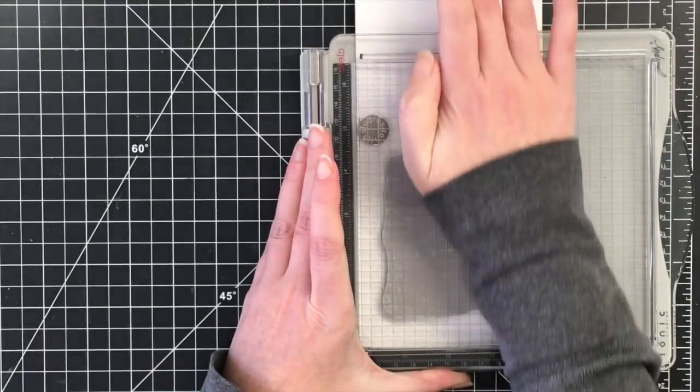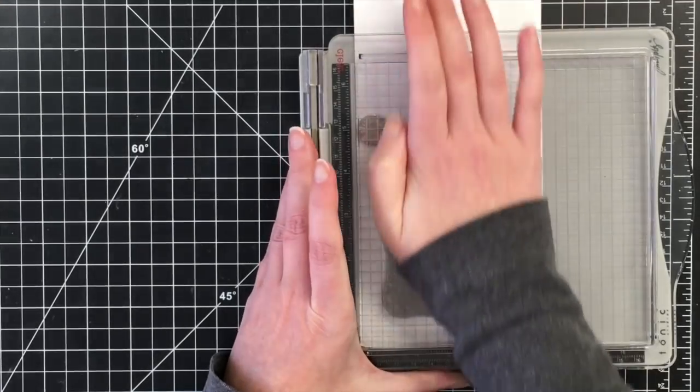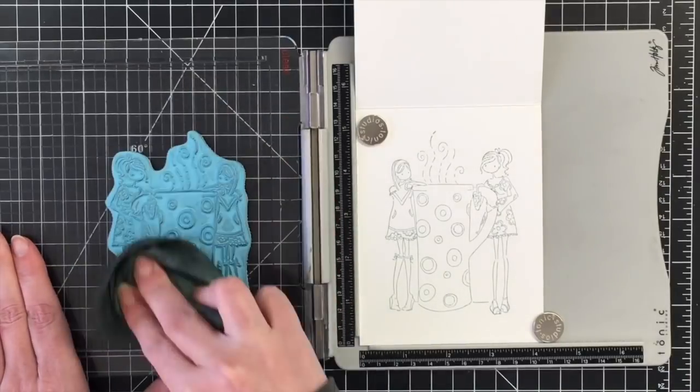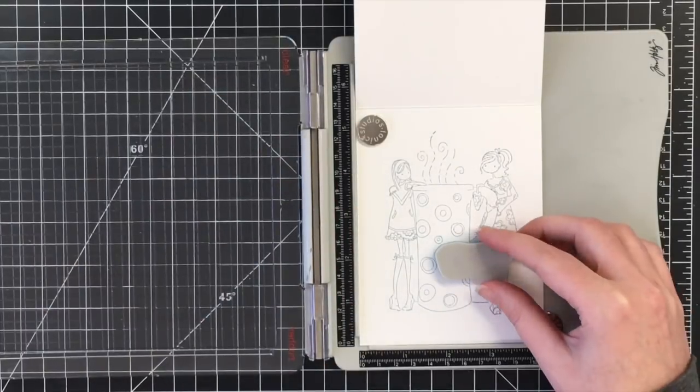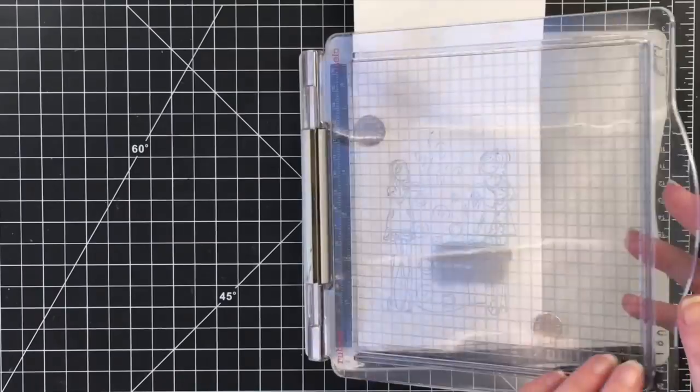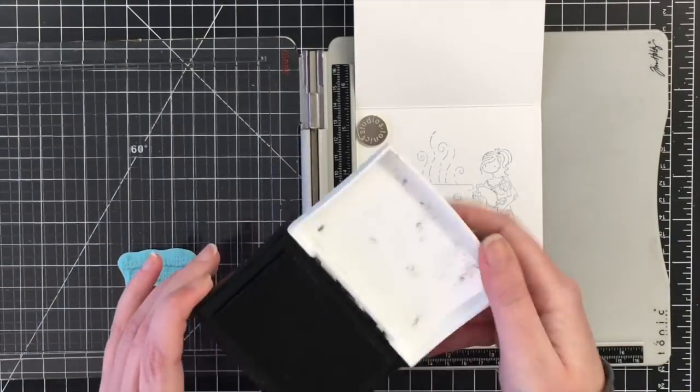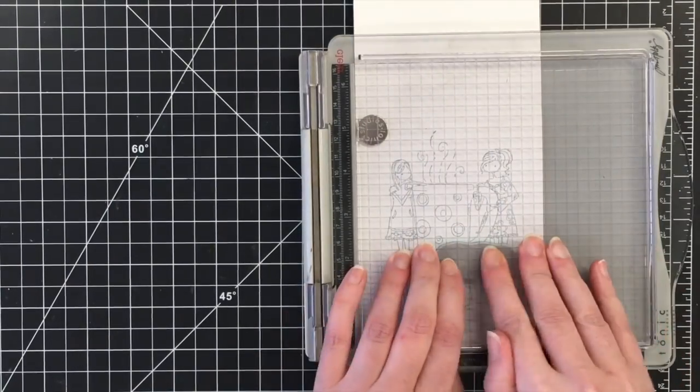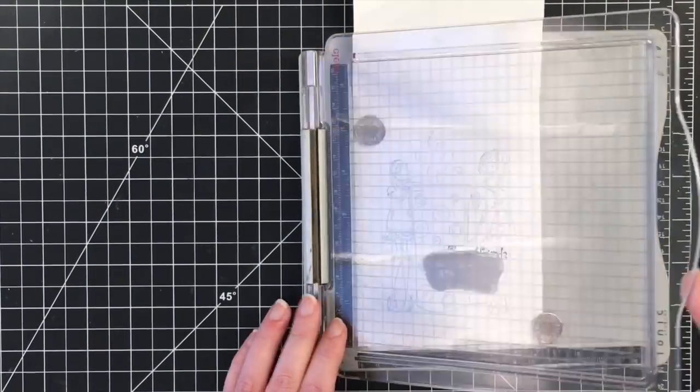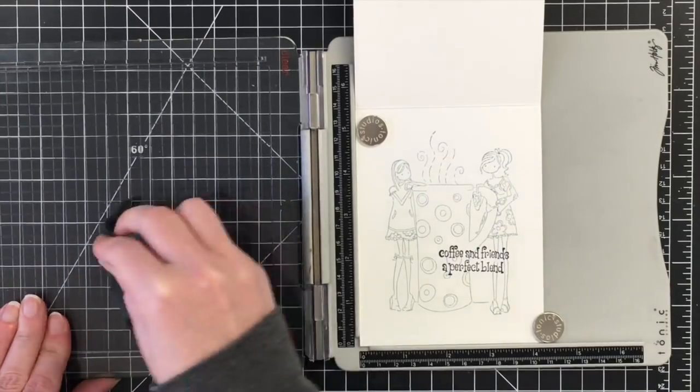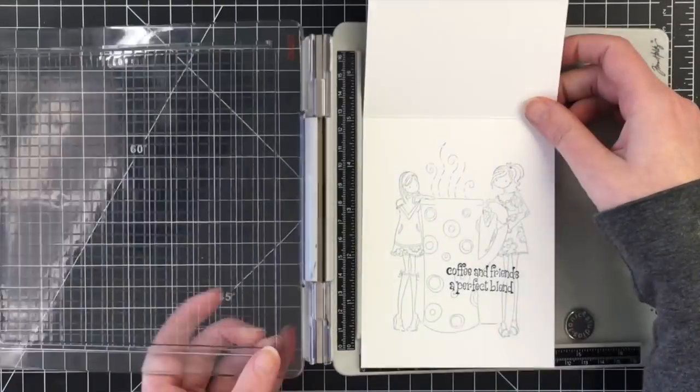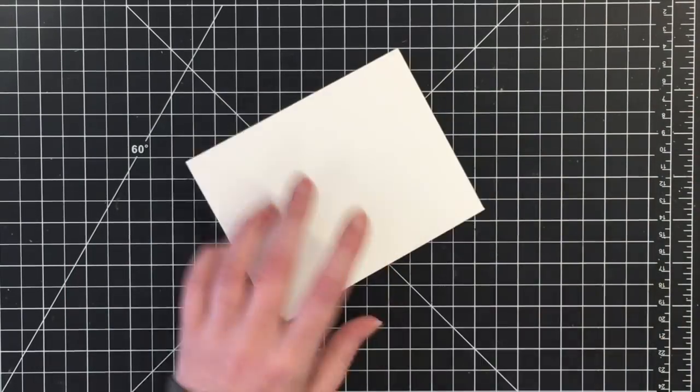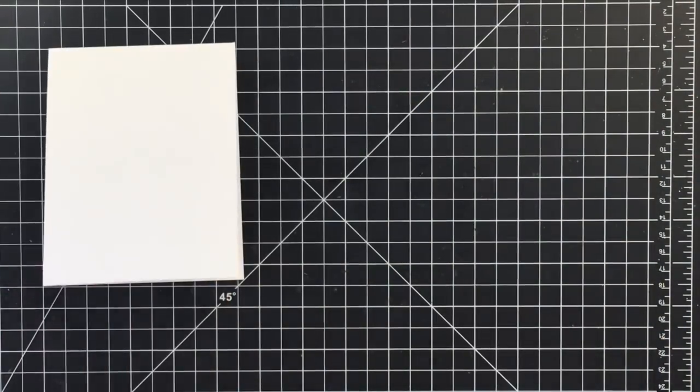Sometimes, or most of the time, I don't complete them on video because I don't always know what I want the sentiment on the inside to say until I'm sending it. But for this one, I knew that I wanted the sentiment to be on the inside. So I'm stamping that up with my VersaFine black onyx ink. And it says coffee and friends, a perfect blend. Now you may notice I got it a little crooked, but that's okay. I just used my Teflon bone folder here just to get that down a little bit more.